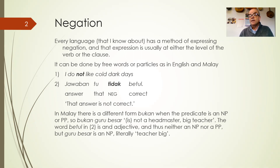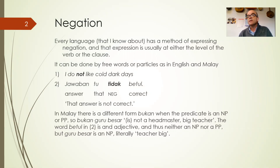Every language I know about has a method of expressing negation, and that expression is usually either at the level of the verb — attached directly to the verb — or at the level of the clause, so it's a marker of the whole clause. An example of clausal negation might be something like a verb that means 'it is not the case that.' There are languages that have such a verb, so you would have a sentence like 'I like cold dark days' and then put that verb at the end: 'it is not the case that I like cold dark days.' In English, we say 'I do not like cold dark days.'